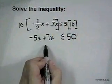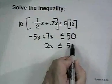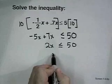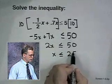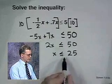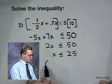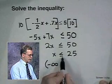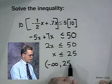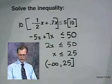This will become negative 5x plus 7x is less than or equal to 50. Combining like terms: 2x is less than or equal to 50. Dividing both sides by 2: x is less than or equal to 25. The interval solution would be everything from negative infinity up to and including 25, so we'll put a square bracket on that end.